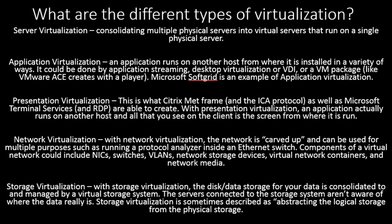What are the different types of virtualization? Server virtualization: consolidating multiple physical servers into virtual servers that run on a single physical server. Application virtualization: an application runs on another host from where it is installed, in a variety of ways — by application streaming, desktop virtualization or VDI, or a VM package like VMware ACE. Microsoft App-V is an example of application virtualization.